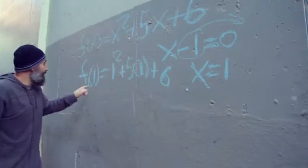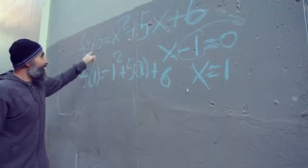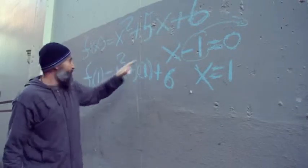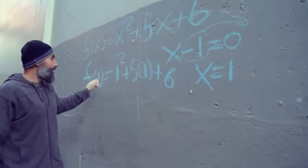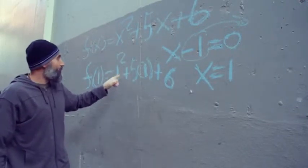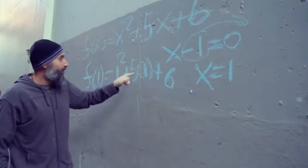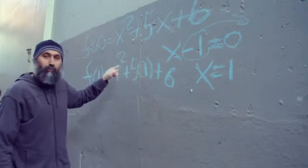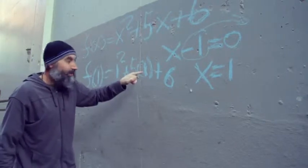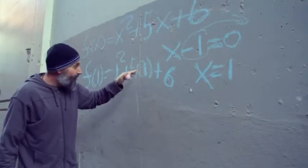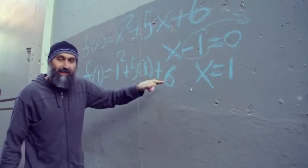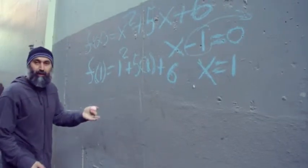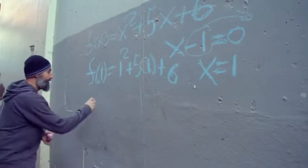What you're doing is subbing in x equals 1 wherever you see x in the function. So this becomes f of 1 is equal to 1 squared plus 5 times 1 plus 6. 1 squared is 1, 5 times 1 is 5, plus 6 — it equals 12. So f of 1 is equal to 12.